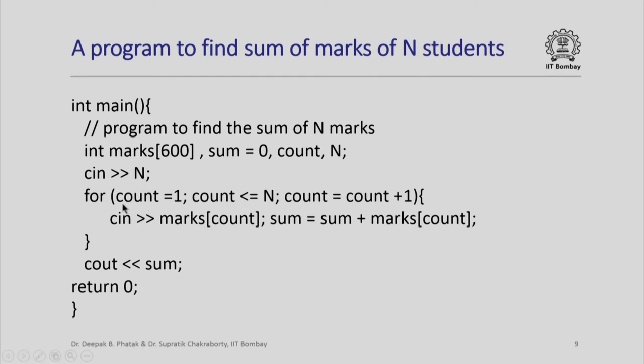As last time we set up an iteration. This iteration will work using the for statement with count equal to 1 all the way up to count less than equal to n. This iteration will be executed n times like we saw last time. And all that we do is we read the counteth element of marks and then add it to sum. We expect that at the end we shall have found the correct sum.